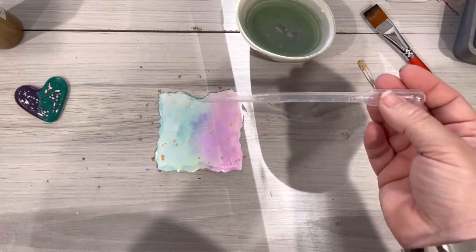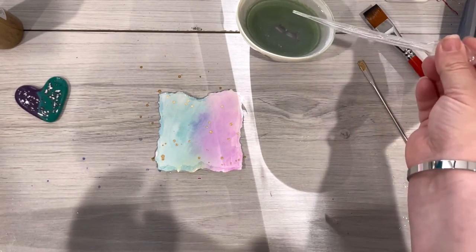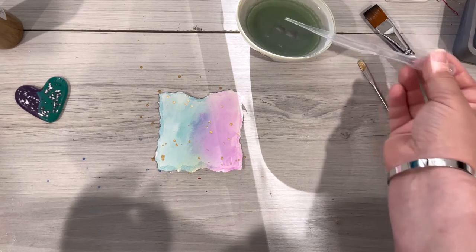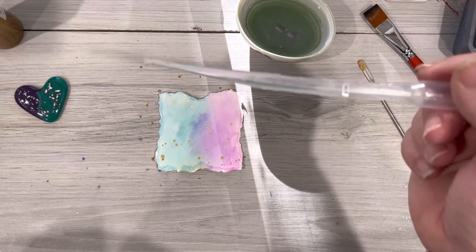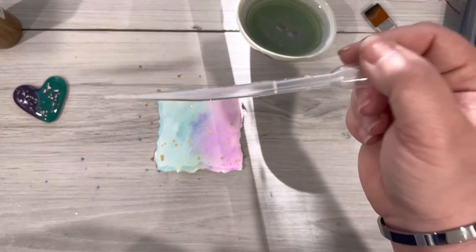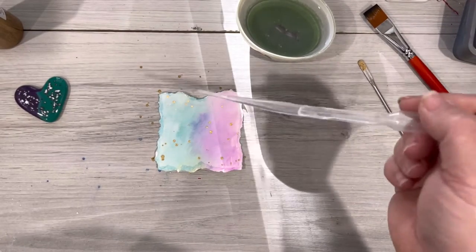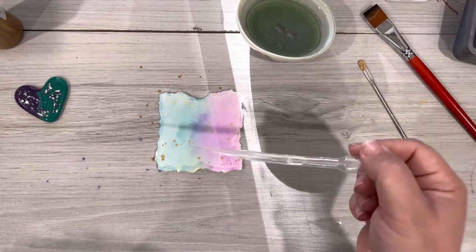One of the principles of mixed media is layering. So we're also going to be creating some unique texture. One thing that these inks can do is reconstitute. That means even though this is dry I can come in with some water and I can strategically drop some little bits of water on here.